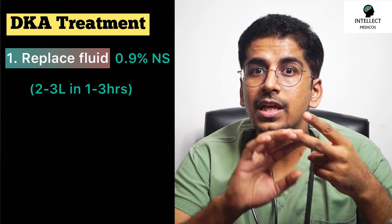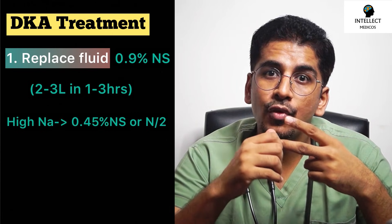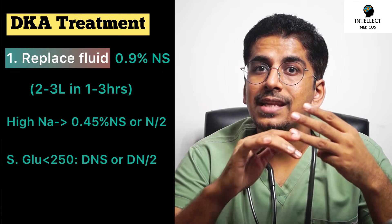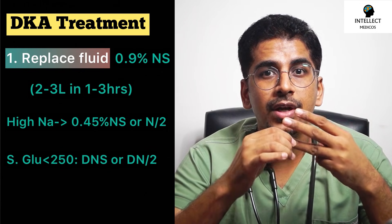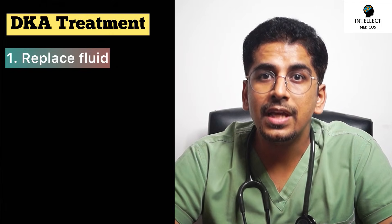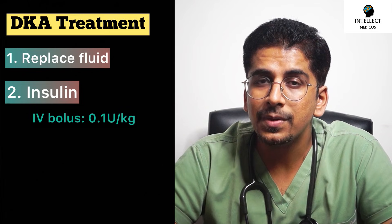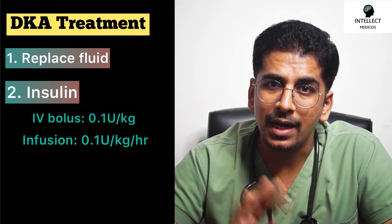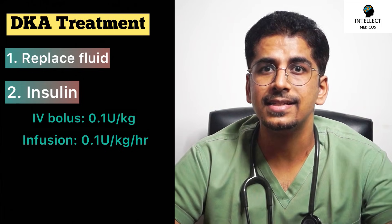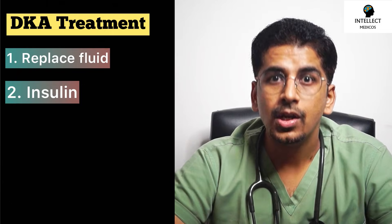After starting fluids, check electrolytes: if sodium is low, continue 0.9% saline; if sodium or chloride is high, switch to 0.45% normal saline (N/2). When blood glucose drops below 250 mg/dL, change to dextrose-containing fluids such as DNS or D/N2. These patients require intensive monitoring of vitals, blood sugar, electrolytes, and urine output, and are typically managed in the ICU.